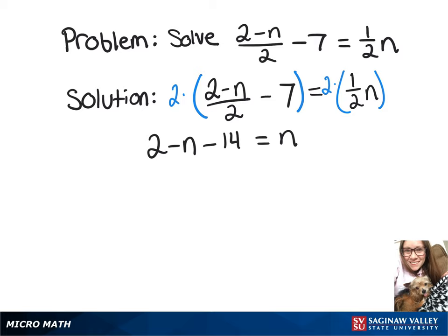We can combine that 2 and negative 14, which leaves us on that side with -n - 12 = n.